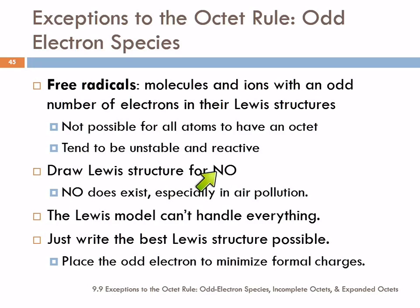So let's draw the Lewis structure for NO — it's one of my favorite molecules. Nitrogen and oxygen. How many valence electrons total do I have? Eleven — five plus six. This is an odd number, so I'll just do my best.